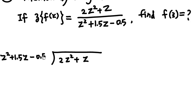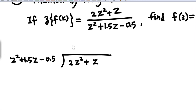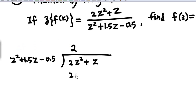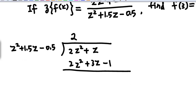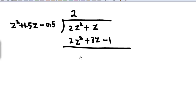In order to get 2Z squared, I need to multiply by 2 first. So 2 times Z squared gives 2Z squared; 2 times 1.5Z gives 3Z; and 2 times minus 0.5 gives minus 1. After the subtraction: 2Z squared minus 2Z squared is 0; Z minus 3Z gives minus 2Z; and 0 minus minus 1 is plus 1.